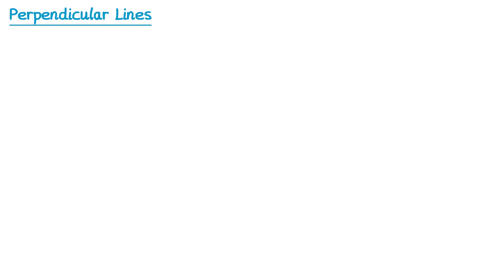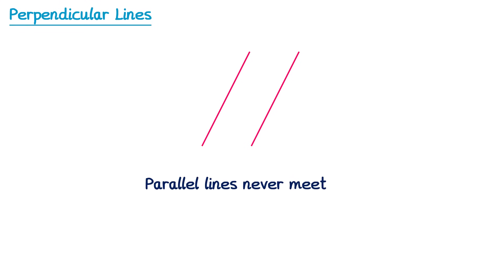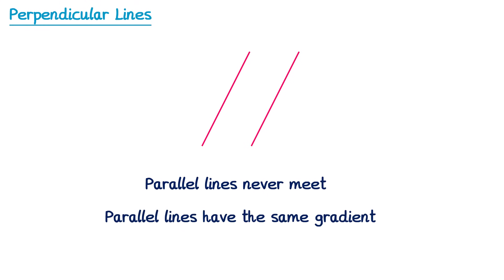In the previous video we looked at parallel lines. If we take a line and draw one that's parallel to it, you can see that these lines never meet — so we would say that parallel lines never meet. When we looked at the gradients of parallel lines we realised they must have the same gradient, since they have the same steepness, so parallel lines have the same gradient.